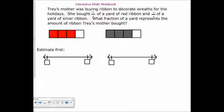So, Trey's mother was buying ribbon to decorate wreaths for the holidays. She bought three-fourths of a yard of red ribbon and three-fourths silver. What fraction of the yard represents all of the ribbon that she bought?